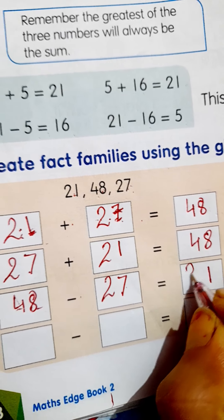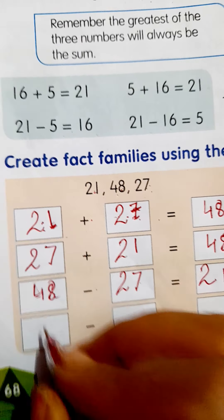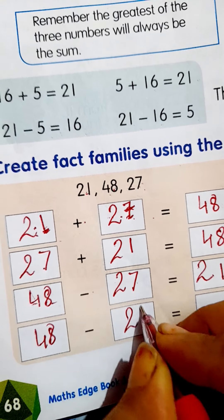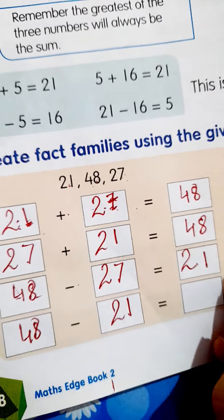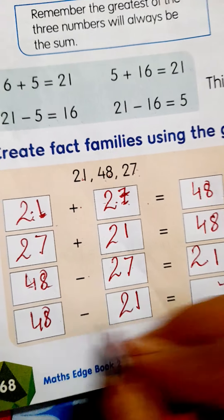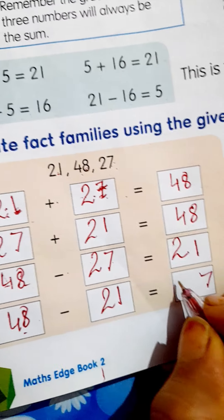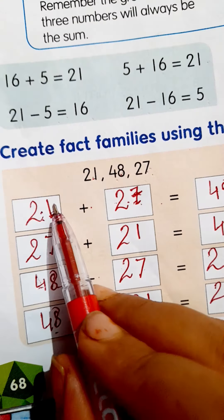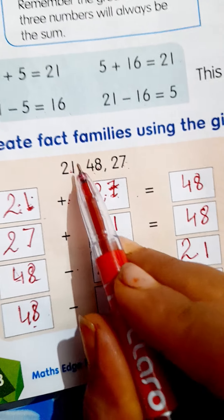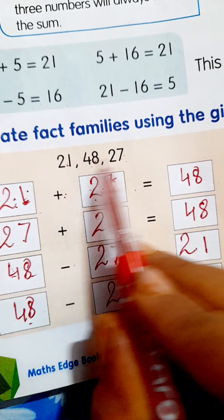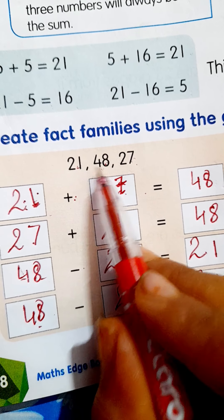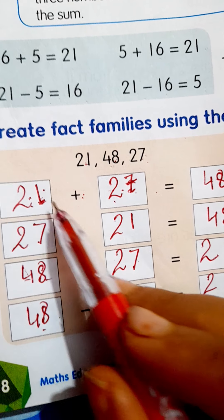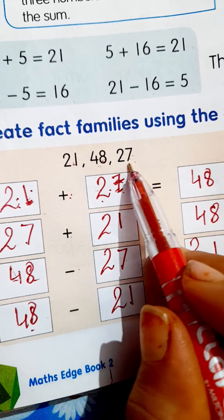आप लोग यहाँ check कर लो — 1 plus 7 is equal to 8, and 2 plus 2 is equal to 4, so 21 plus 27 equals 48. Now 27 plus 21 — again we get 48. Addition fact हो गया।